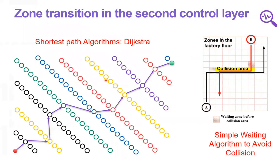For two different control layers, we considered simple approaches. For example, for second control layer, we considered Dijkstra algorithm for finding the shortest path. And also we considered a simple waiting algorithm for collision avoidance.